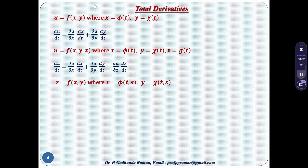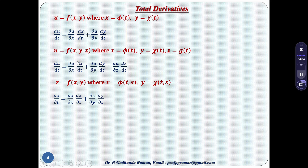For z equals f(x, y), where x is a function of t and s, and y is a function of t and s, z also depends on t and s. Here ∂z/∂t equals ∂z/∂x · ∂x/∂t plus ∂z/∂y · ∂y/∂t. The difference from before is that x depends on two variables t and s, not just one. And ∂z/∂s equals ∂z/∂x · ∂x/∂s plus ∂z/∂y · ∂y/∂s.